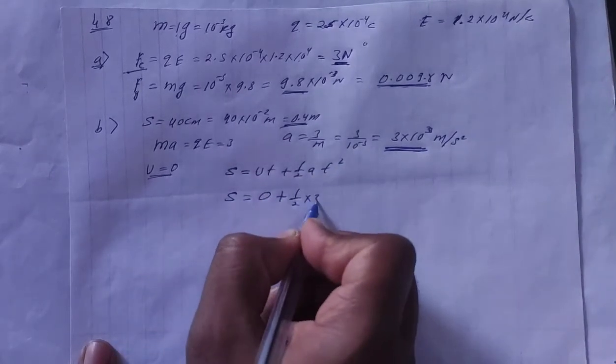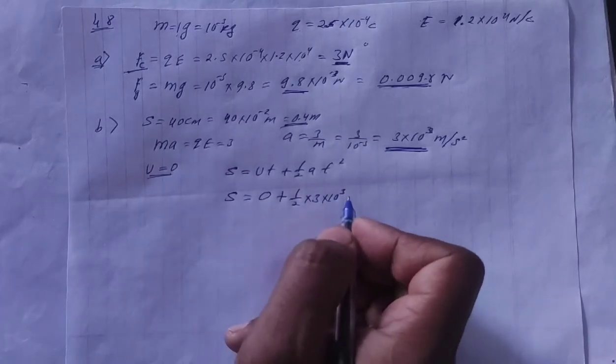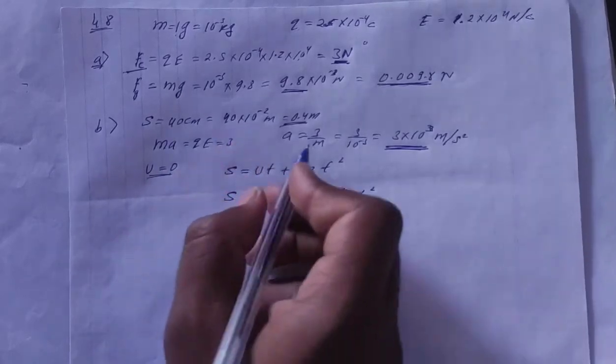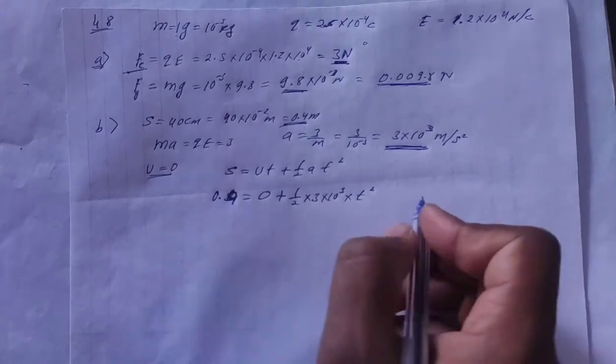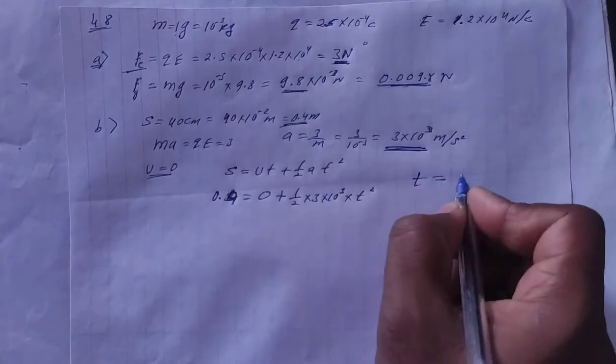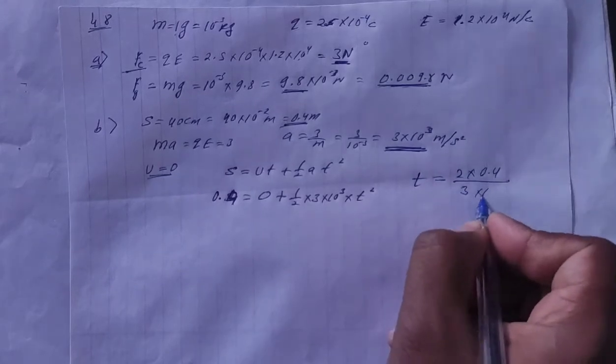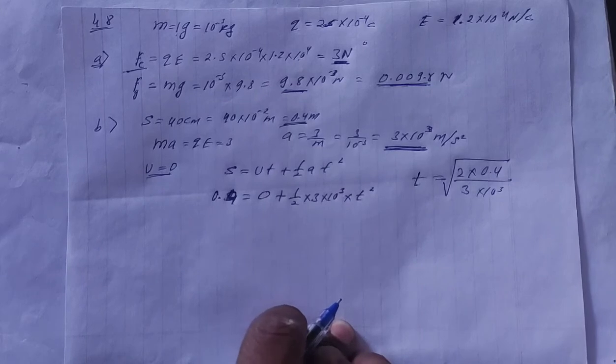We need to find how much displacement it will travel. So we apply Newton's second equation. Which equation? S is equal to ut plus half at square. Right? We need to find s, u is zero. Half, a is 3 into 10 to the power 3. And t is... we need to find t, right? Actually, time is what we need to find, displacement is given as 0.4.